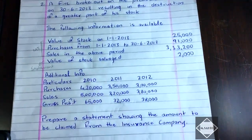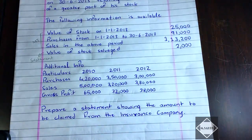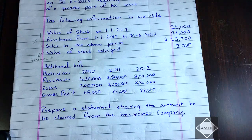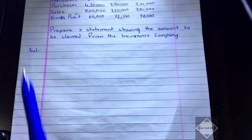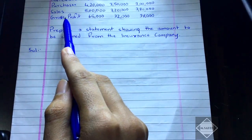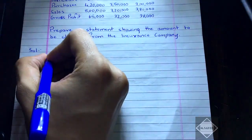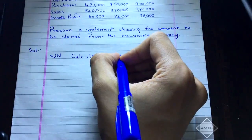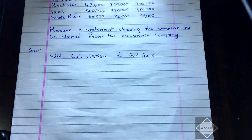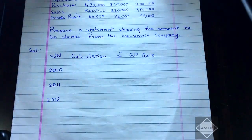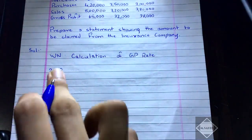We need to prepare a statement showing the amount to be claimed from the insurance company. We have to find the closing stock from the memorandum trading account, and from the statement find the claim amount. First, we prepare a working note for the calculation of the GP rate, since there are three years — 2010, 2011, and 2012 — and we need to find the GP rate for all three and then the average.